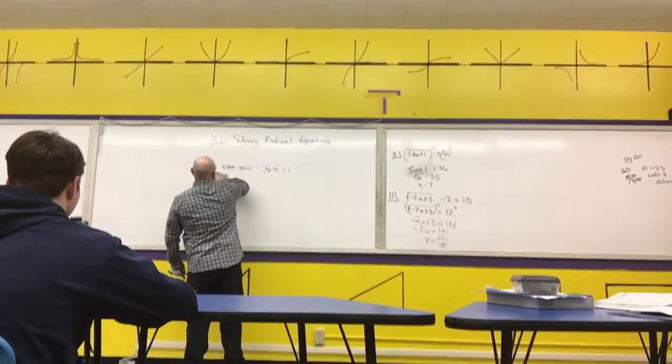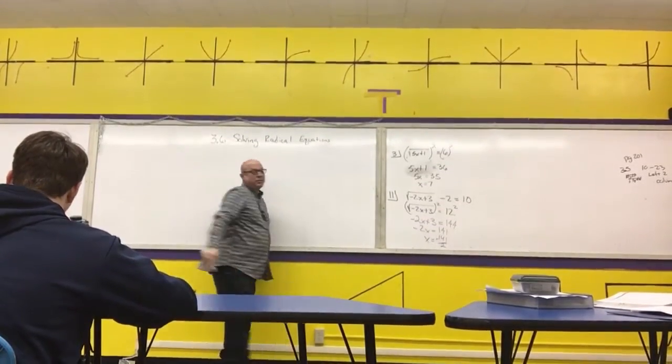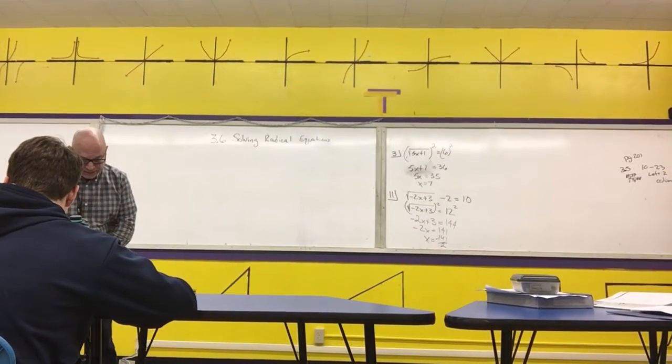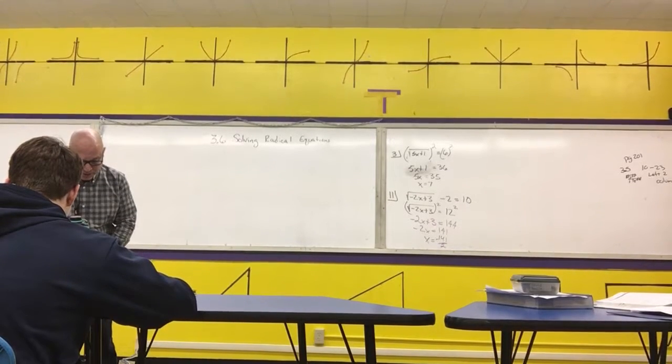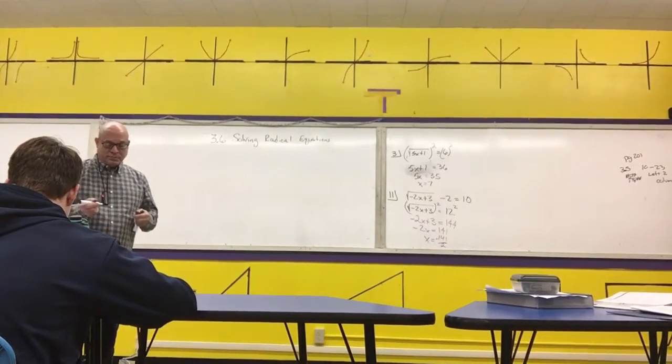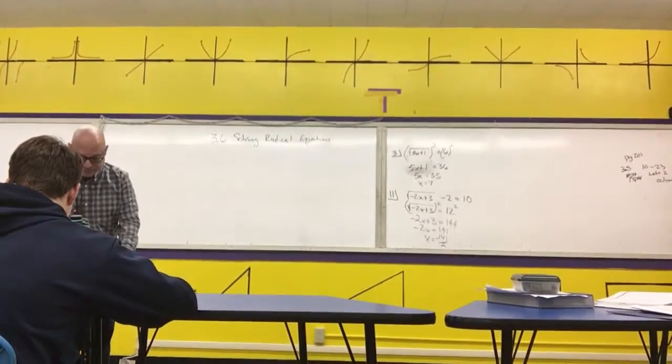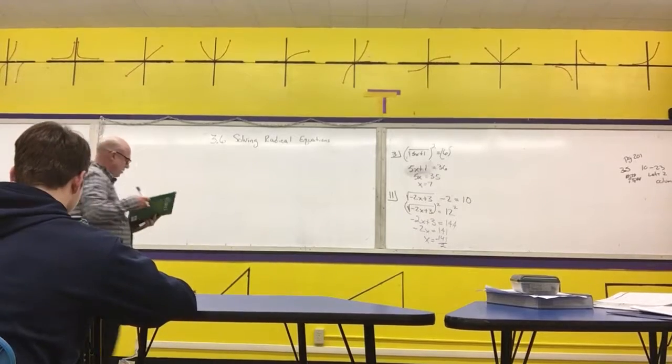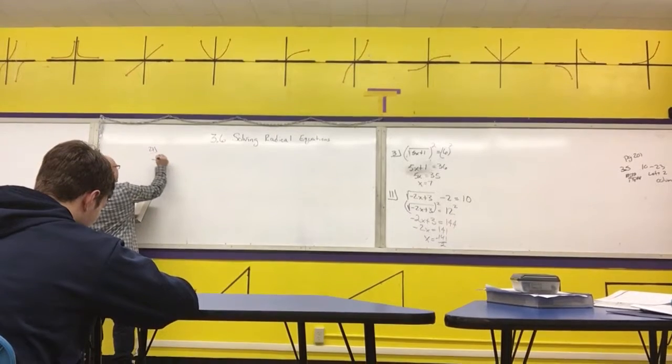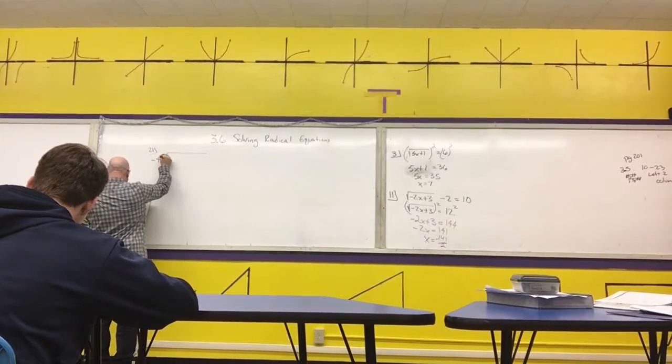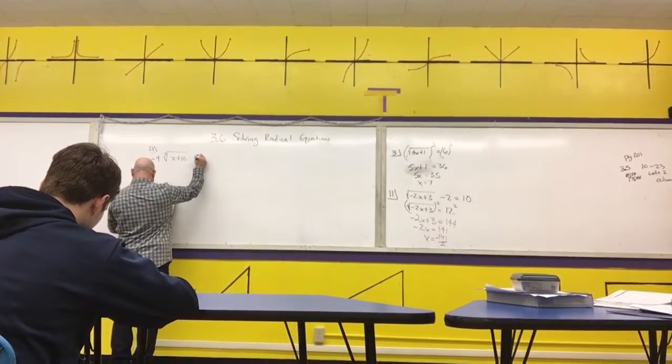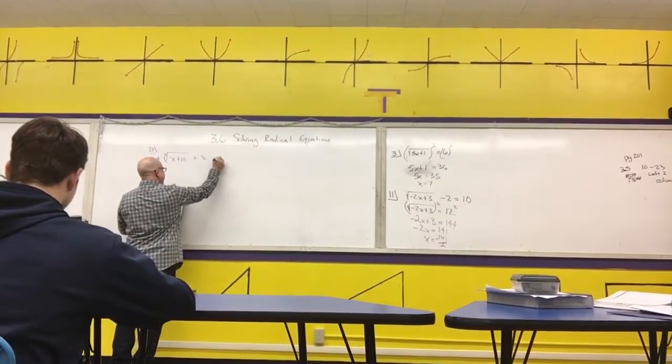Nice and simple with square roots. What do you think the next one I'm going to do is? How about some cube roots? Let's do 21. Negative 4 times the cube root of x plus 10 plus 3 equals 15.